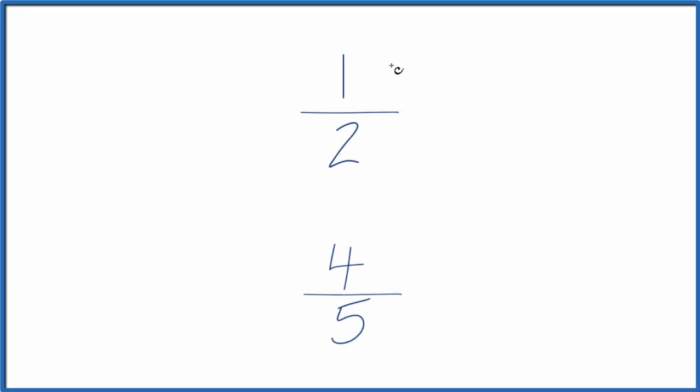Let's see which fraction is greater, one-half or four-fifths. And the way we do that, we need to find a common denominator, something that both two and five will go in evenly.